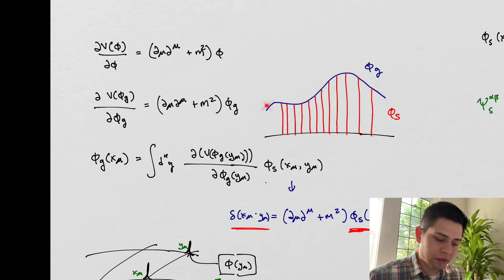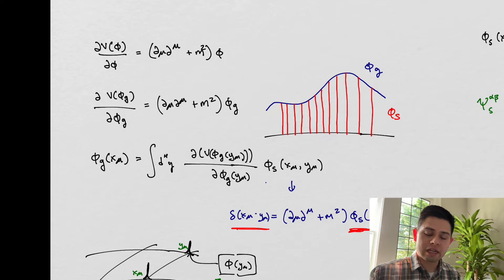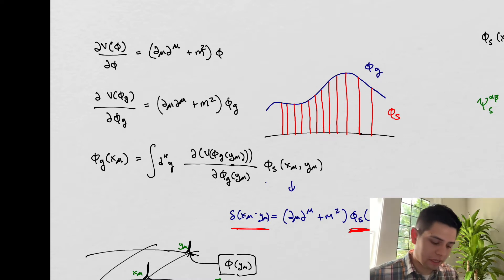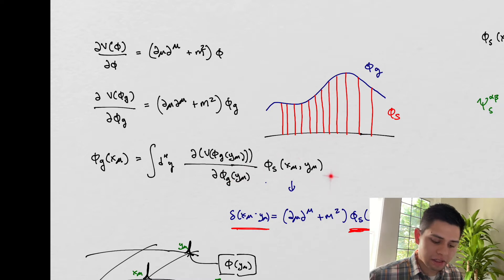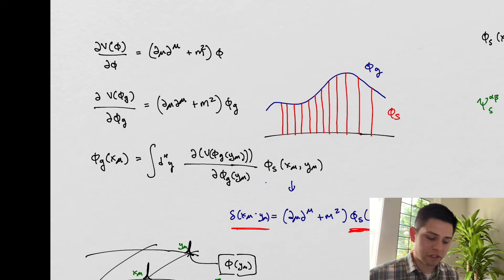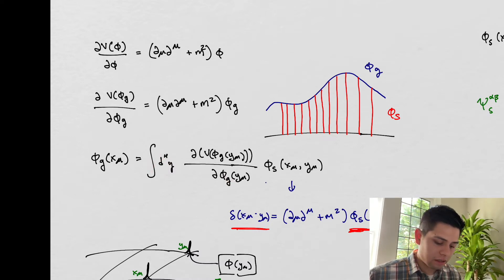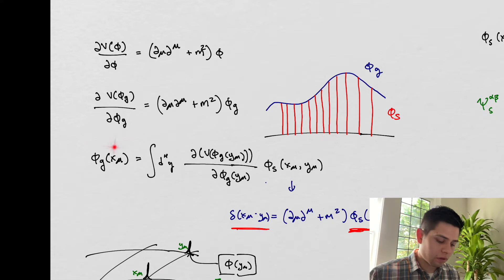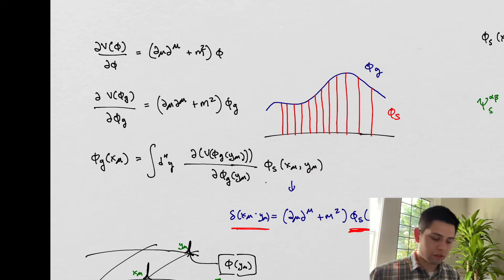We might have this blue function here being a solution to our equation, but wouldn't it be nice if we had some functions — delta functions — that constructed this general function? That's exactly what we're doing here: we have the height of the function and the width of each, multiplied by some special functions. These special functions, when we add them all up, give us our general function. We're also going to say that these obey our Klein-Gordon equation of motion. So this goes from general functions to special functions — we've changed sub-G to sub-S.